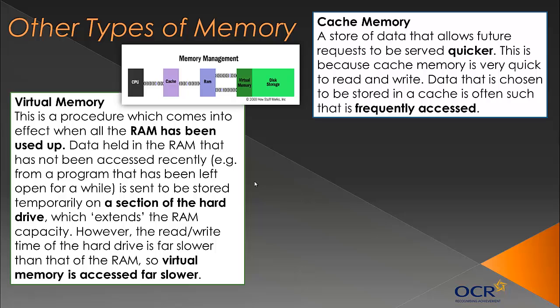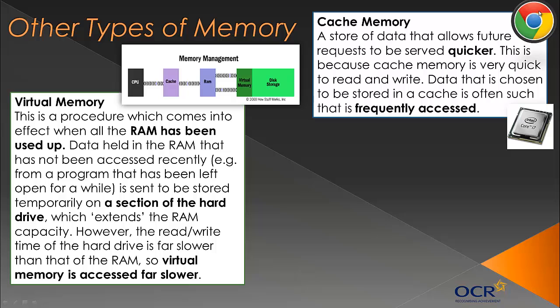Another type of memory is cache memory. Cache memory is a store of data that allows future requests to be served quicker. It's quicker than RAM — very quick to read and write. Data chosen to be stored in cache is often frequently accessed data. For example, Google Chrome is fast partly because it has quite a lot of cache, meaning your favourite websites like Twitter, Facebook, YouTube, and Google have their data stored in this cache. Whenever you access those sites they load almost instantaneously, saving you time in the long run.